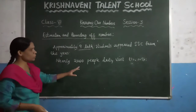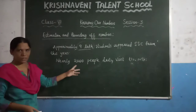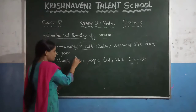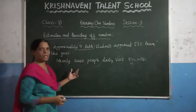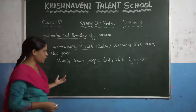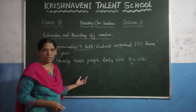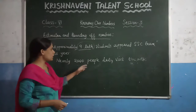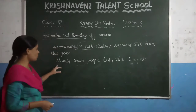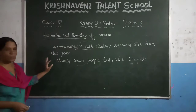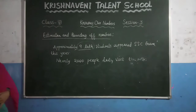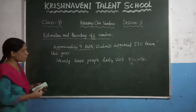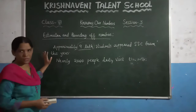Similarly, nearly 2,000 people visit Tirupati. You don't know how many people — just we are estimating that nearly 2,000 people. It may be 1,900, it may be 2,100. So here just we are estimating up to 2,000. So to estimate any number, just we have to round off these numbers. Now let us see a few examples.